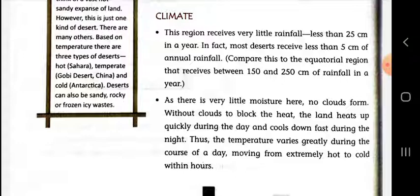This region receives very little rainfall — less than 25 cm in a year. In fact, most deserts receive less than 5 cm of annual rainfall. Compare this to the equatorial region that receives between 150 and 250 cm of rainfall in a year — so it is very little. As there is very little moisture here, no clouds form. Without clouds to block the heat, the land heats up quickly during the day and cools down fast during the night. Thus the temperature varies greatly during the course of a day, moving from extremely hot to cold within hours.